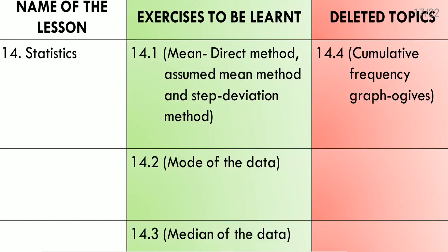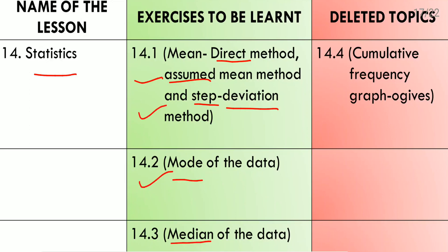Lesson 14: Statistics. Exercise 14.1 is about mean, using three methods: direct method, assumed mean method, and step deviation method — all three methods we need to learn. Exercise 14.2 is about mode of the data. Exercise 14.3 is about median of the data. All three exercises we need to learn. But exercise 14.4, about the cumulative frequency graph (Ogive), is deleted.